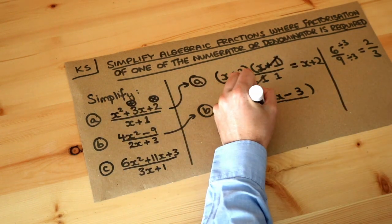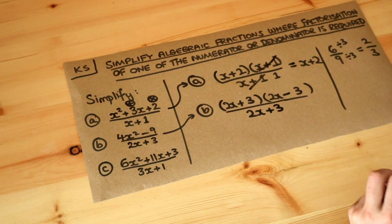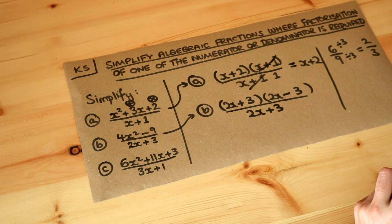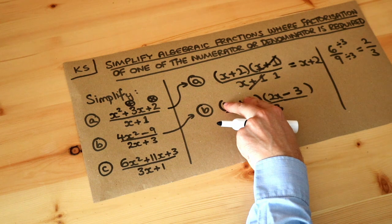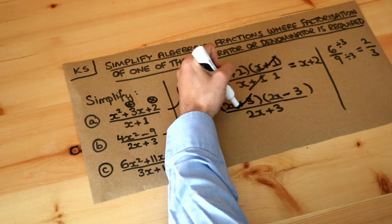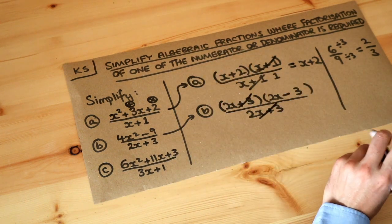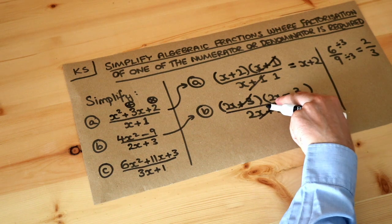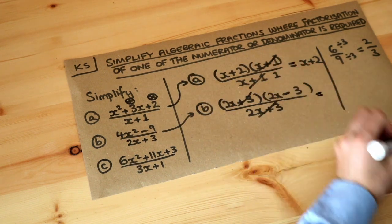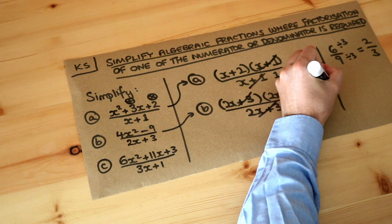And then 2x plus 3, we can't factorize that. And we have a similar situation before, we've got a common factor of 2x plus 3 at the top and the bottom, so we can just cross those out to cancel them. And we're left with 2x minus 3 basically over 1, but we don't care about the over 1, so it's just 2x minus 3.